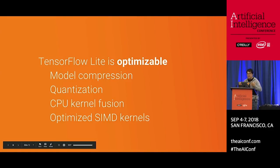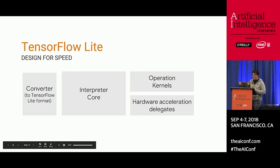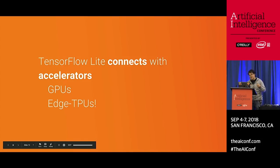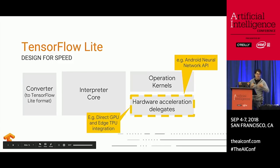The second property is that it's optimizable. We have model compression, quantization, and CPU kernel fusion — all optimization techniques to ensure the best performance and a small size. This is achieved through our architecture: a converter and an interpreter core. The interpreter core delegates to kernels optimized for mobile and small devices with NEON and ARM. Unlike TensorFlow, we also have the notion of delegation — we can delegate to GPUs, Edge TPUs, or accelerators, giving TensorFlow Lite the chance to hand part of the graph to a hardware accelerator for specialized processing.